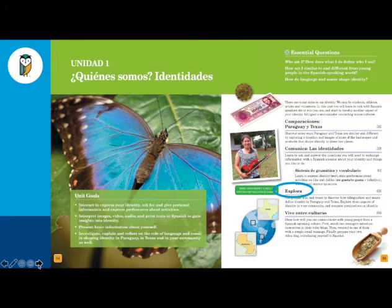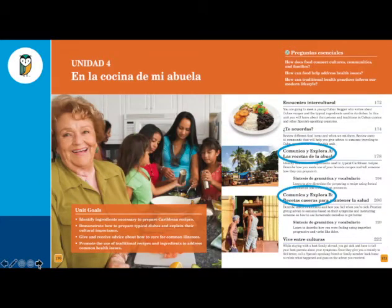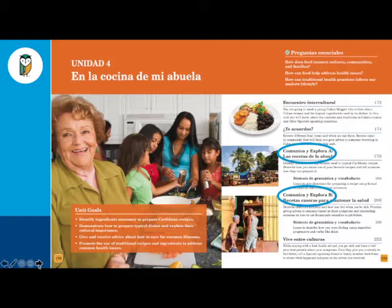This is the Level 1 textbook. In the Level 2 and 3 textbooks, there is also an Explora section, but it's a little different — it's not at the end of the unit as a separate Explora section. In Level 2 and 3, it's combined with the Comunica section, so it's called Comunica y Explora. The only difference is that in the upper levels, the authentic resources are more interspersed throughout the entire unit, whereas in Level 1 they're in a section at the end.